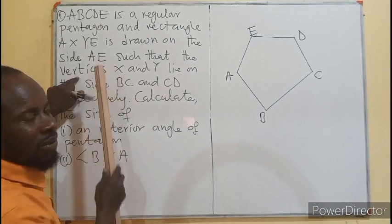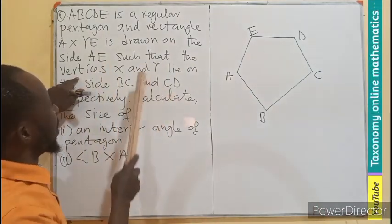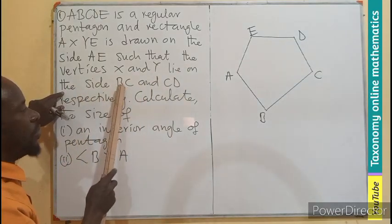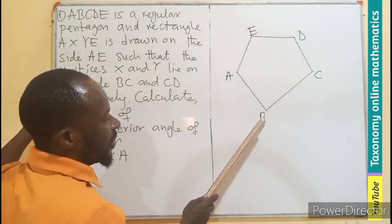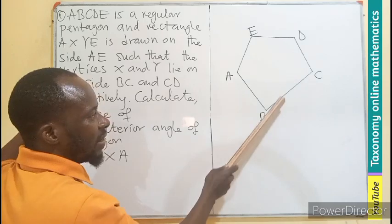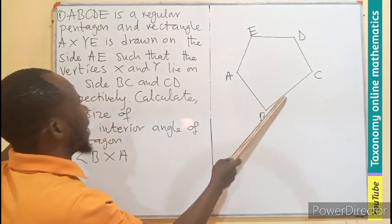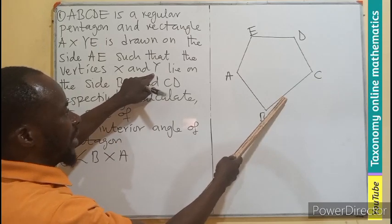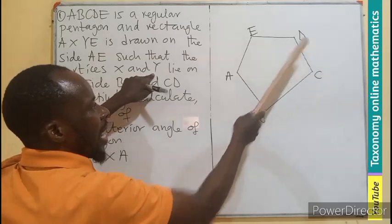Such that the vertices, vertices mean the corner. The vertices X lie on the side BC. Where is the side BC? BC. So let's see, a vertex X can be here. Then a vertex Y is also lying on the side CD. Can be there.